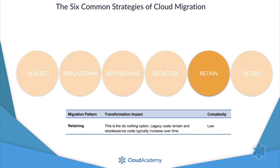Strategy number five is to retain. You may want to retain portions of your IT portfolio because there are some applications that you are not ready to migrate and feel more comfortable keeping them on-premise. With this use case, it may make sense to retain aspects of your IT services in their current environment and implement a hybrid or part migration strategy. This approach makes sense if current regulatory or constitutional rules require you to store or run some aspects of your services or business application on-premise or within specific regions.